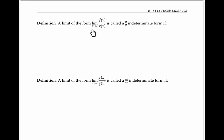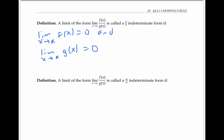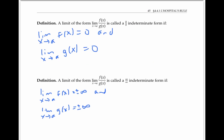A limit of the form: the limit as x goes to a of f of x over g of x is called a zero over zero indeterminate form, if the limit as x goes to a of f of x is equal to zero, and the limit as x goes to a of g of x is equal to zero. We saw an example of a zero over zero indeterminate form in the introductory slide.